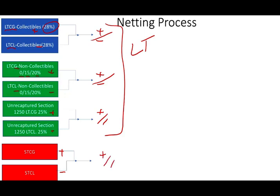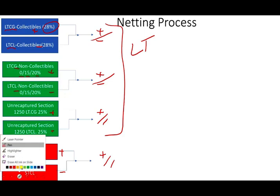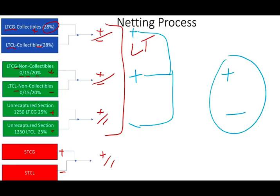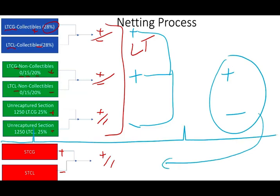So the first thing you do in this process is net all of these out within their categories. You might have a plus here, a minus here, a plus here — you net them out against each other until you either have a plus or a minus. Then whatever you have in the long-term categories, you net it against the short-term category. The good thing about the netting process is that the IRS and Congress is unusually generous. They want you to take the maximum advantage of your capital losses.